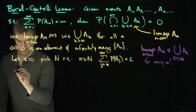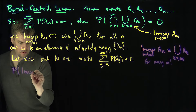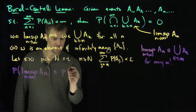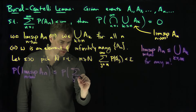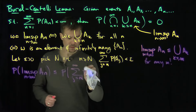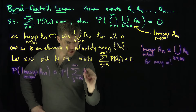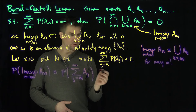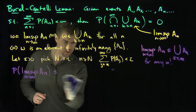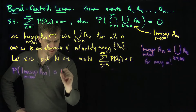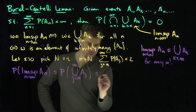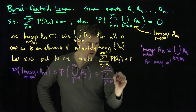In particular, the probability of the limsup as n goes to infinity of AN is less than or equal to — since it's contained in any one of these — the probability of the union of j going from n to infinity of AJ. And that is less than or equal to the sum of j going from n to infinity of the probability of AJ.